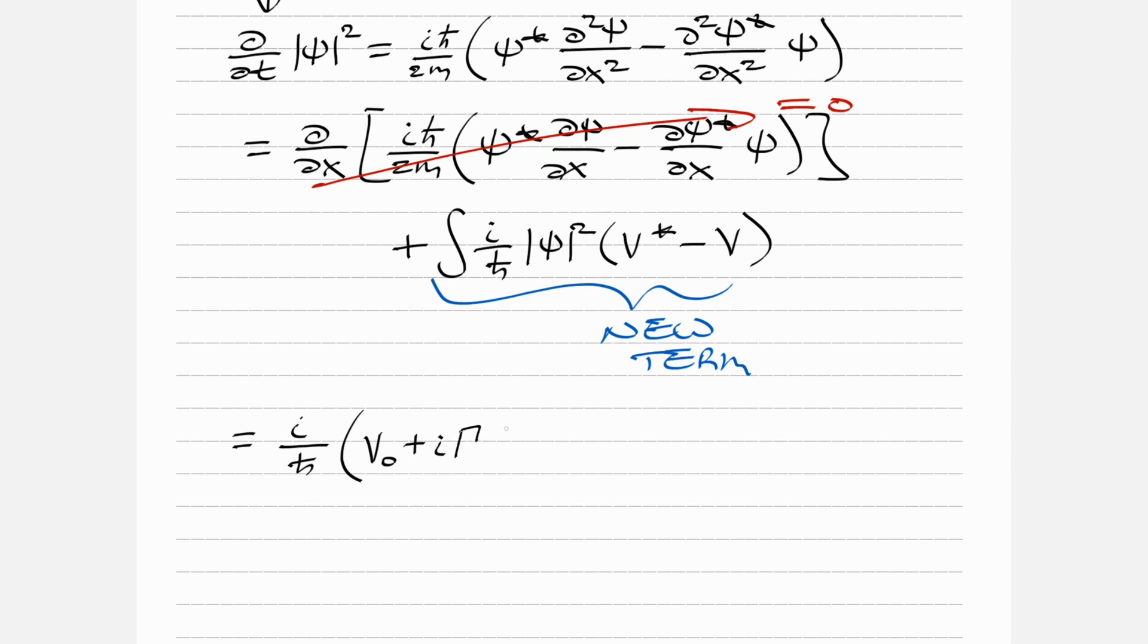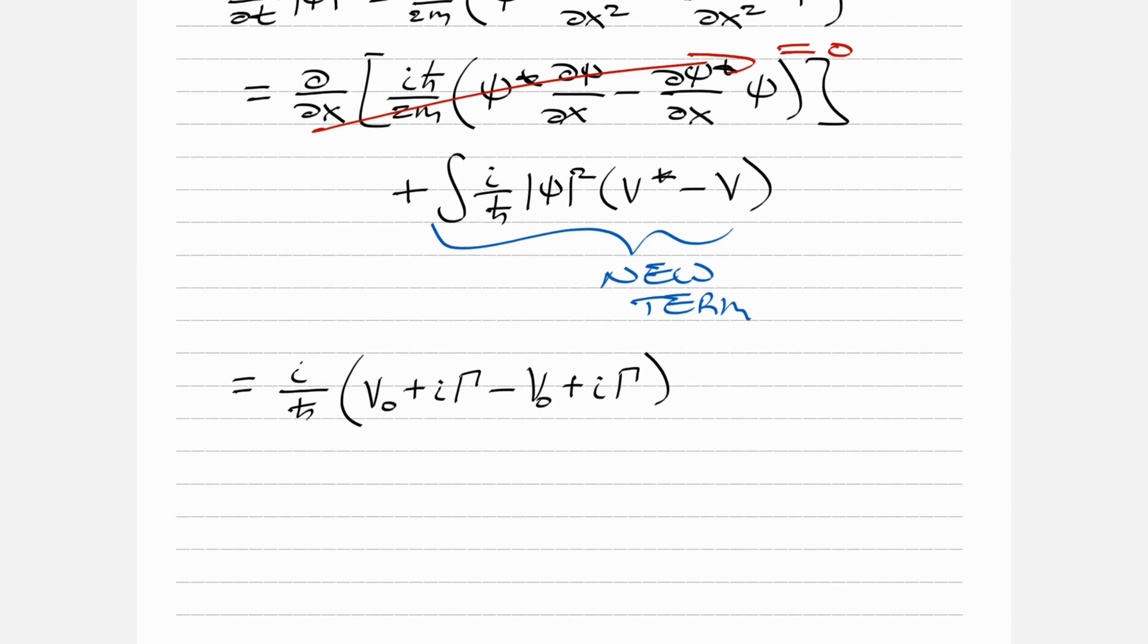That's V₀ plus iΓ - we see the plus iΓ both times because we did V*, so we switch the sign - and then minus V, so we switch the sign, and that's how we end up with that arrangement. The V₀'s cancel, and then we'll distribute in the i.